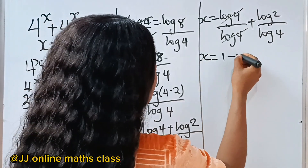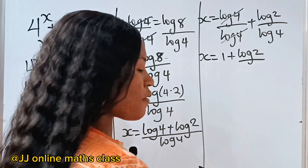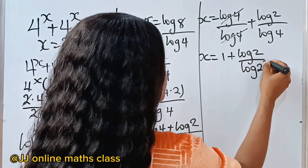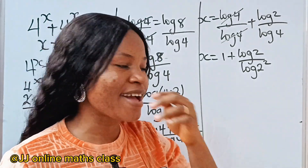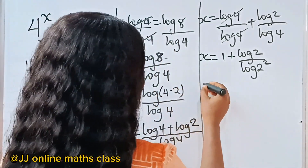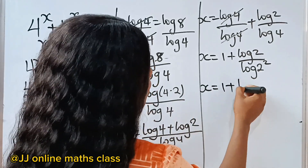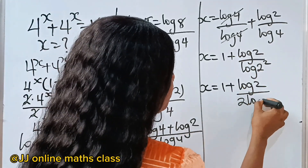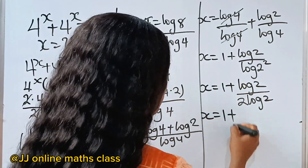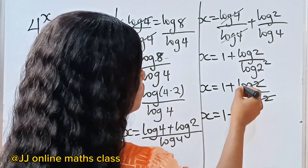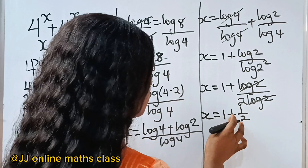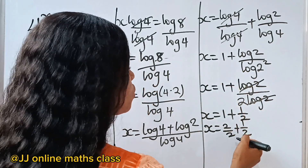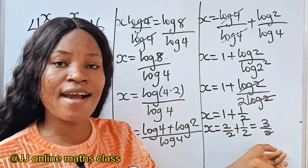Log 4 divided by log 4 gives us 1. Then log 4 can be expressed as log 2 squared, so by the power rule that becomes 2 log 2. So x equals 1 plus log 2 divided by 2 log 2. The log 2 cancels, leaving x equals 1 plus 1/2, which is 2/2 plus 1/2, equaling 3/2. So x is equal to 3 over 2.